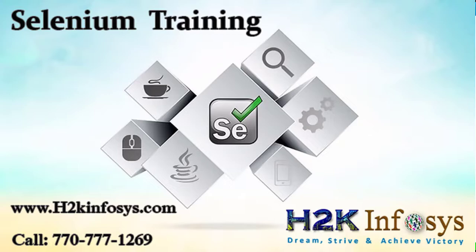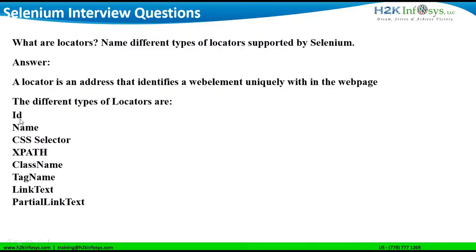If an interviewer asks you to explain further, go ahead and explain each locator. An ID locator is a unique locator for every web element on the web page. If a web page has a unique ID, we would go for ID locator in our scripts. Name locator is similar to ID, although it may not be unique — the value for this locator is the name attribute of the web element. CSS selector uses element tags and attributes to locate the web element. XPath locator searches elements in the DOM; it is very important and widely used by Selenium testers. It is reliable, but slower than CSS selector.